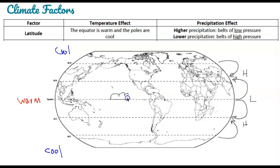So I can add some clouds here and maybe some rain at the equator. Oh, that's not a good cloud. Whereas on the 30 degree lines north and south of the equator, it is lower precipitation and generally clear.